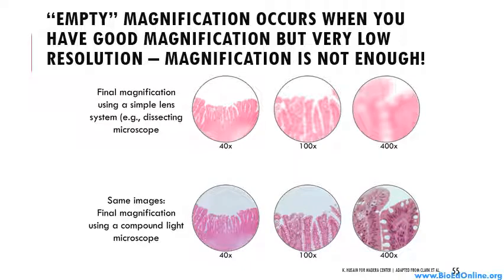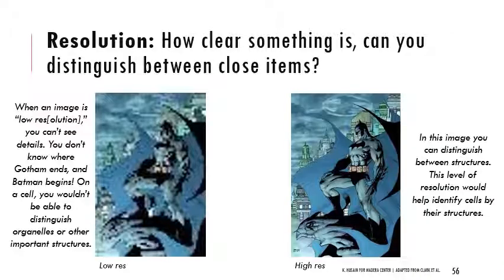Magnification on its own isn't everything. If you zoom in but don't enhance the image, you have empty magnification. So another goal of microscopy is resolution — how clear something appears, whether you can actually distinguish between close items. In this image of Batman on the left, you can't really tell where his cape ends and Gotham begins — it's a low-resolution image. But on the right, you see all those structures very clearly. If you think about a cell, with low resolution you probably wouldn't be able to see unique cell structures like cilia — little hairs on the outside of some cells for movement — but with high resolution you can see those identifying structures.